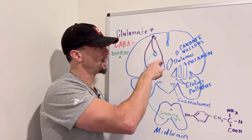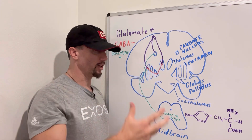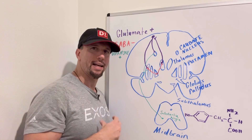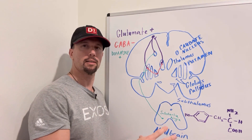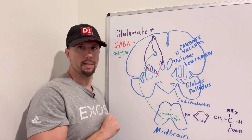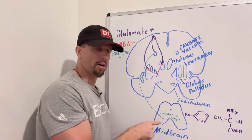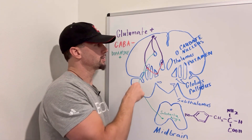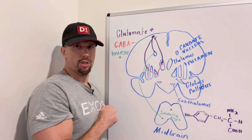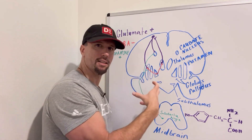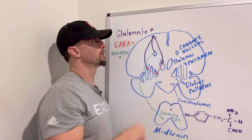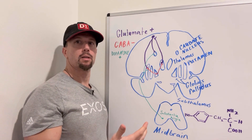This excitatory signal from the thalamus goes back up to the cortex, stimulating and initiating movement. But you need this pathway enhanced to really get that initiation going. So it also requires dopamine, an excitatory neurotransmitter, released from the substantia nigra pars compacta. Dopamine travels up to the striatum and further stimulates these GABAergic neurons along with the glutamatergic neuron, enhancing the signal back up to the motor cortex to initiate movement.